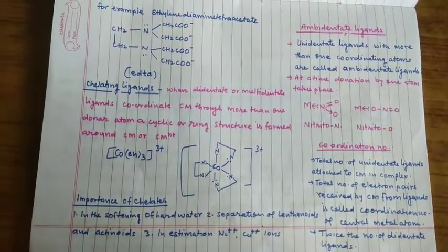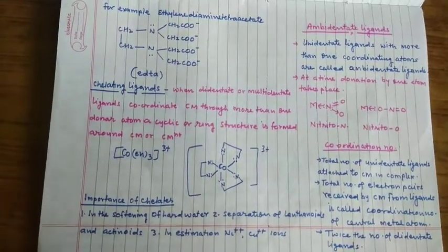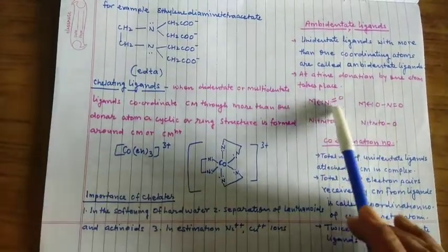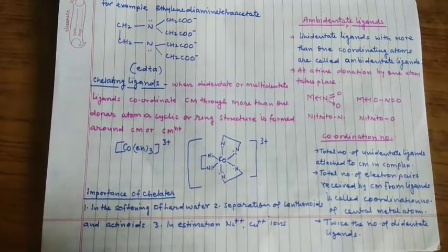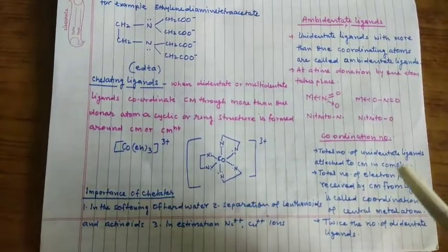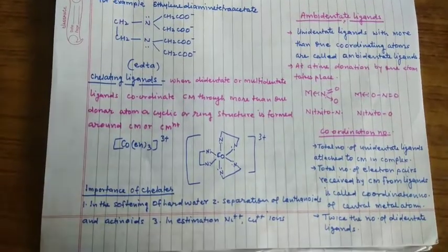लेकिन at a time एक ही तरफ से donation होगा। अगर एक तरफ से donation हो चुका है तो दूसरे तरफ से नहीं होगा। और किस तरफ से donation ज्यादा होगा ये इस बात पर depend करेगा कि metal और ligand atom के बीच का जो bond है वो कितना strong है।